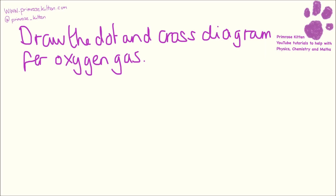Dot and cross diagrams are complicated at the best of times, but this was the question a couple of years ago and it threw people. Now oxygen gas has a double bond. It wasn't just asking about oxygen — it was oxygen gas, which is O₂, and a double bond in the middle.